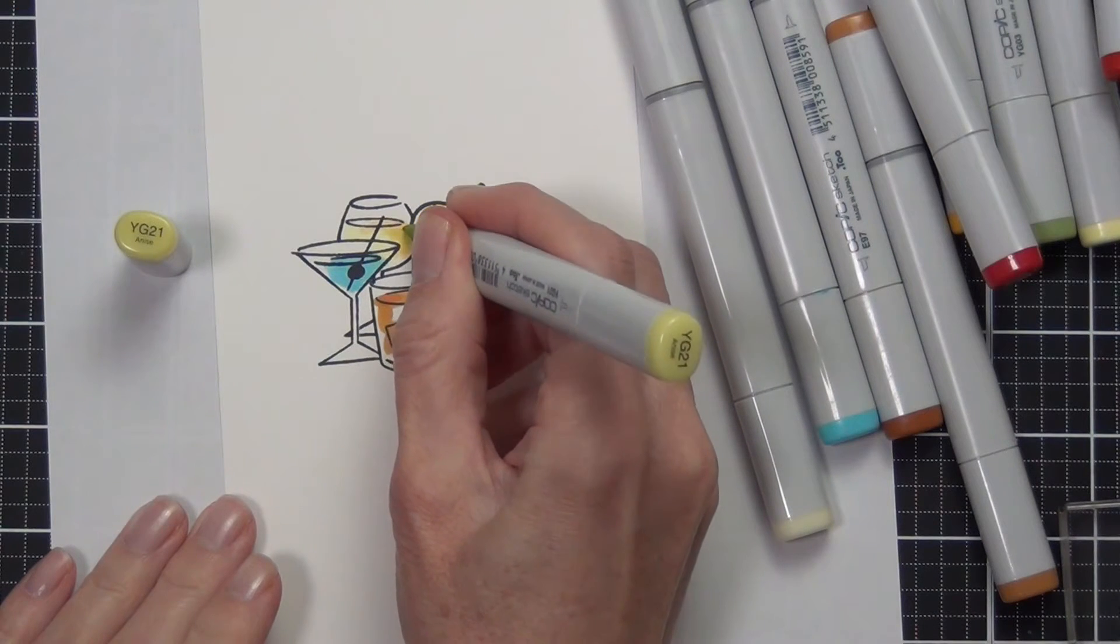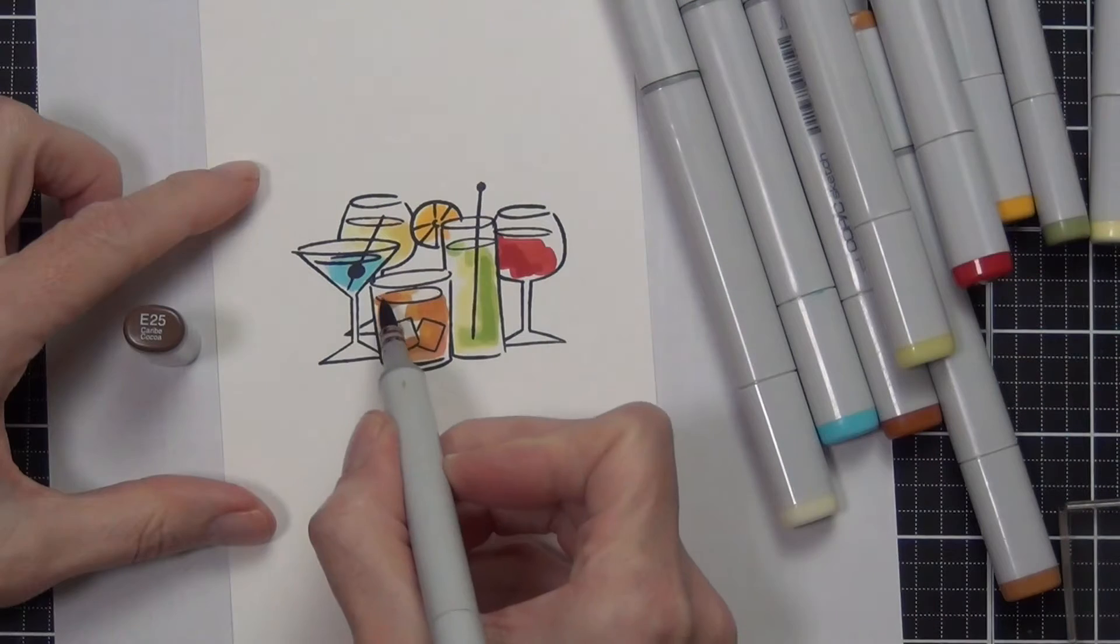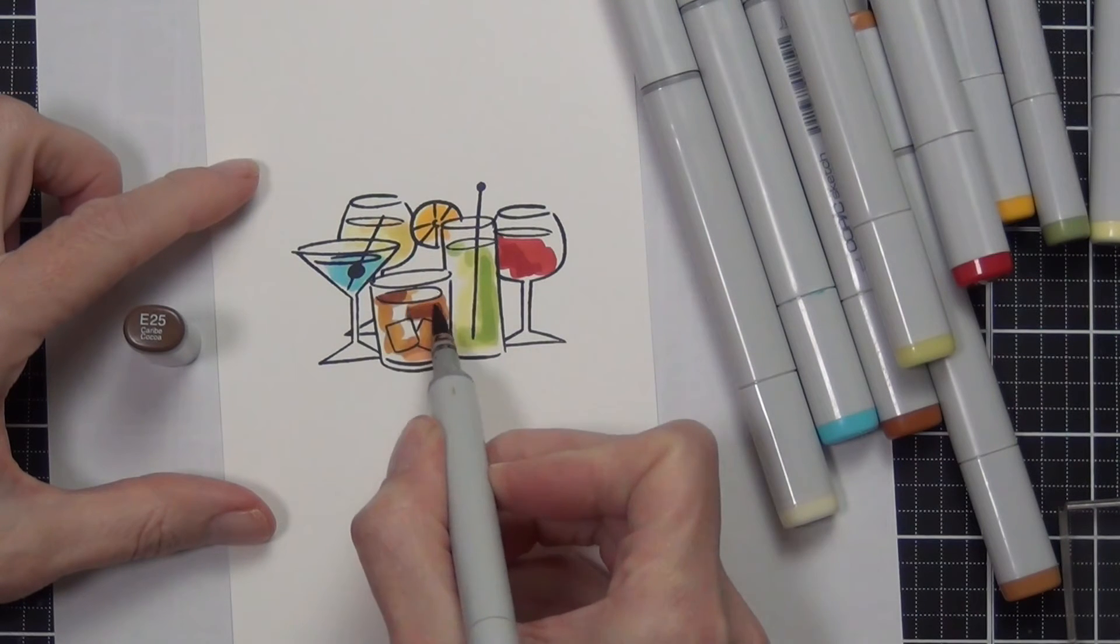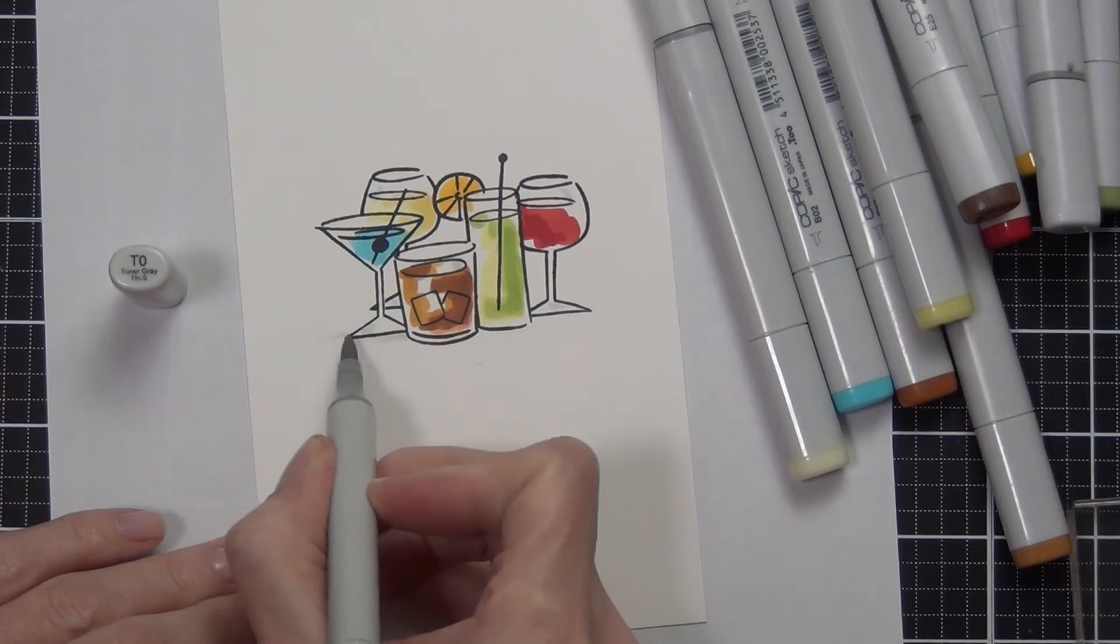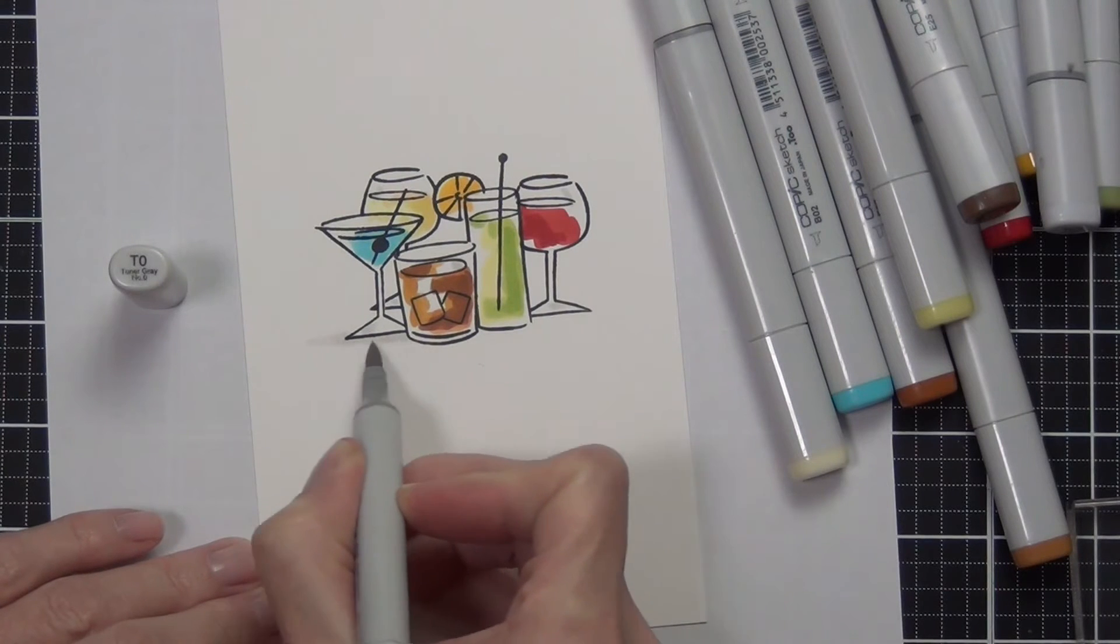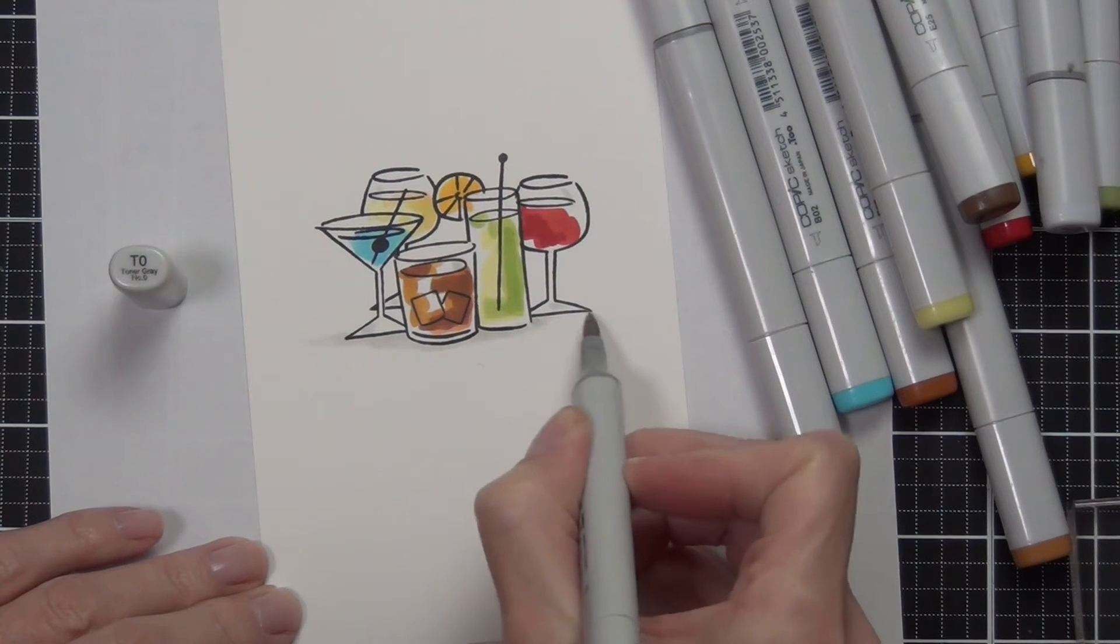This is an accessory set that goes with the voices in my head stamp set by Julie, and this is part of a release happening with the essentials by Allen - that's the mini voices in my head, the voices in my head volume 3, and this accessory set.